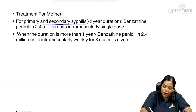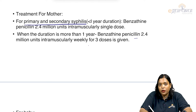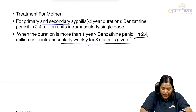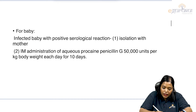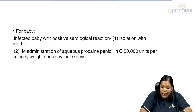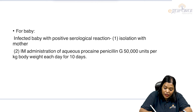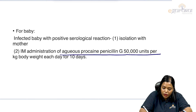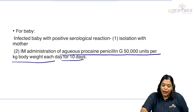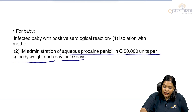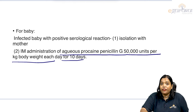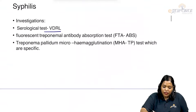When the duration is more than one year, give benzathine penicillin 2.4 million units intramuscularly weekly for three doses. For an infected baby with positive serology, isolate from the mother and administer aqueous procaine penicillin G 50,000 units per kg body weight intramuscularly for 10 days.